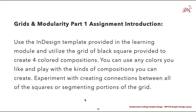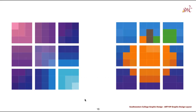Within this module, you are going to be working on two different parts of an assignment. The Grids and Modularity Part 1 Assignment will use InDesign and a template provided within the learning module. You're going to utilize the grid of black squares provided to create four colored compositions. You can use any colors you like and experiment with the kinds of compositions you can create — creating connections between all the squares or segmenting portions of the grid. Work with the same grid in each composition. I would encourage you to use two compositions to create a more organic, non-pictorial layout and two that are pictorial and share some sort of visual language referencing an image.